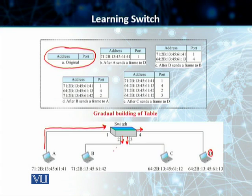The switch is actually going to learn the address of A from that communication. Because A sent this frame, the switch will add an entry to its switching table with the MAC address of A and the port number that station A is connected to.